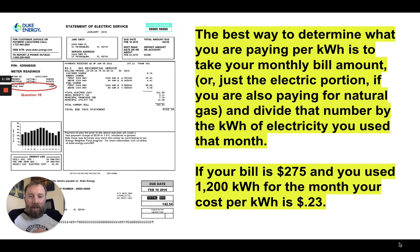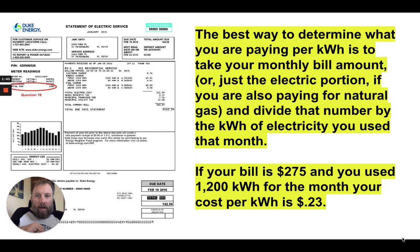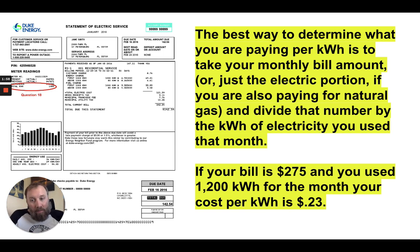I'm going to show you a formula to help you figure that out. The best way to determine what you're paying per kilowatt hour is to take your monthly bill amount — or at least the electric portion of the bill if you're also paying for natural gas. If that's the case, mathematically back out the natural gas portion of the bill.